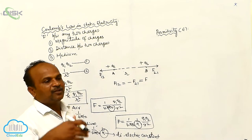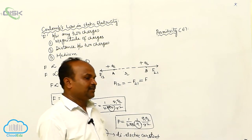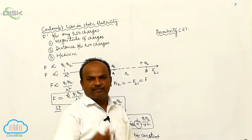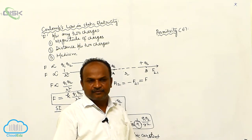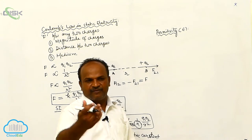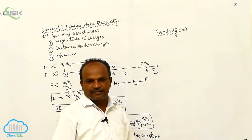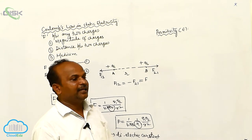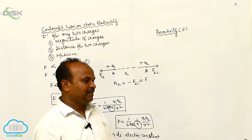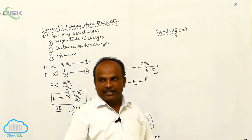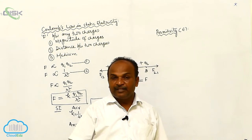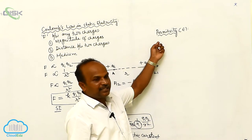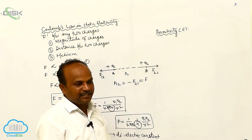For any particular medium, there are so many properties — there is a density, there is a volume, there is a refractive index. Similarly, there is another property: electrical permittivity. The duty of electrical permittivity is to determine the force between the two charges; this is called electric permittivity.